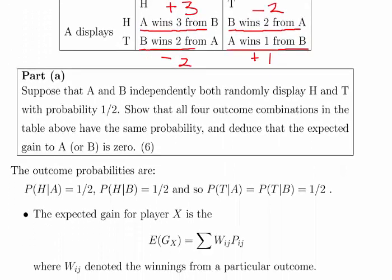Now suppose that A and B independently both randomly display heads and tails with a probability of 1 half. So 50% of the time I go with heads, 50% of the time I go with tails, and player B also the same as well. Show that all four outcomes in the table above have the same probability and deduce that the expected gain from A or B is 0.